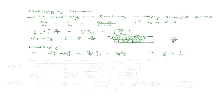Now let's talk about writing answers in simplest form — our answer always has to be in simplest form. So let's say we have six over seventy-seven times seven over eight. Following the rule and multiplying straight across, we get six times seven over seventy-seven times eight, which gives us forty-two over six hundred and sixteen. That's not simplified, so we need to simplify it.